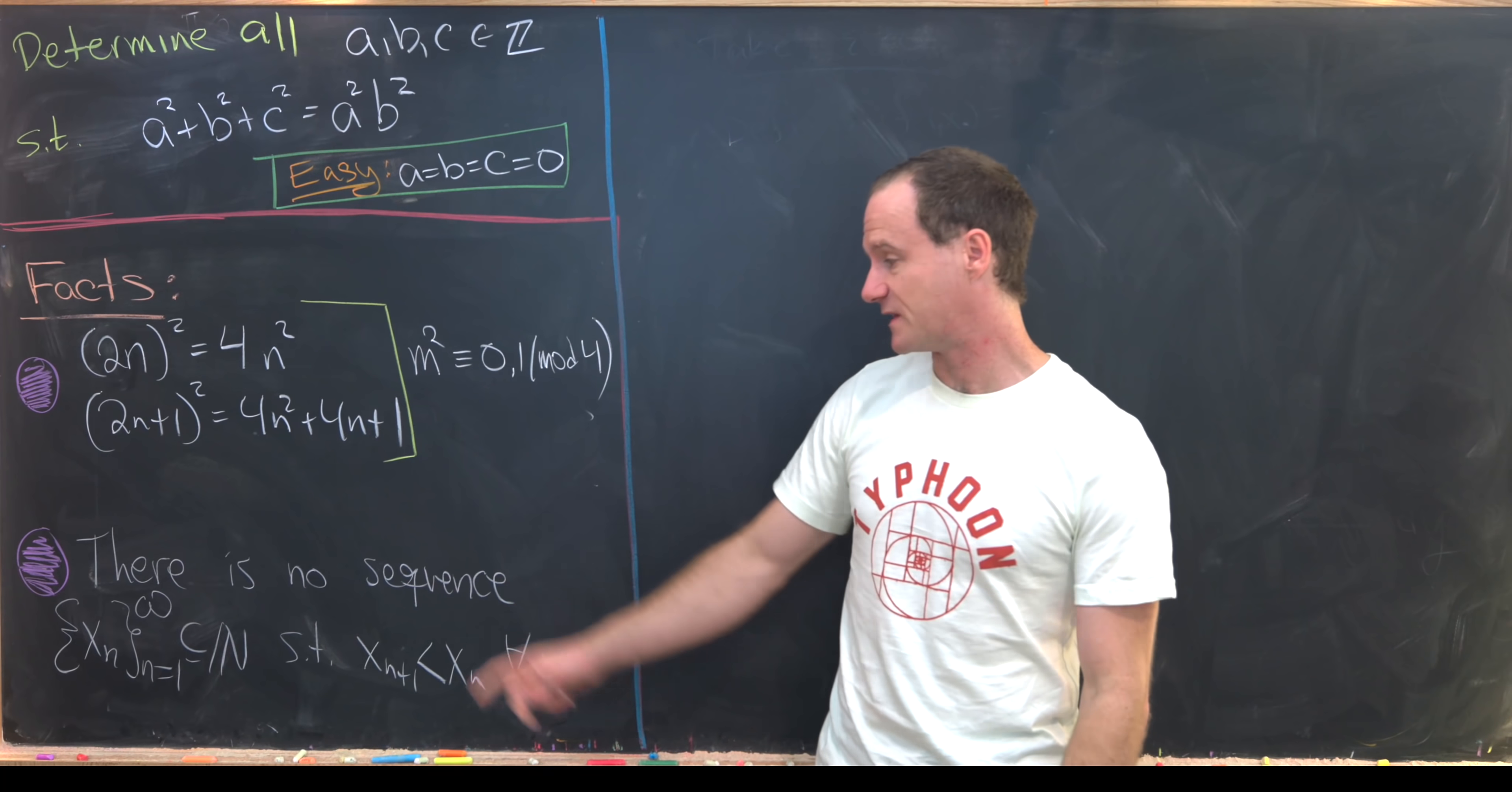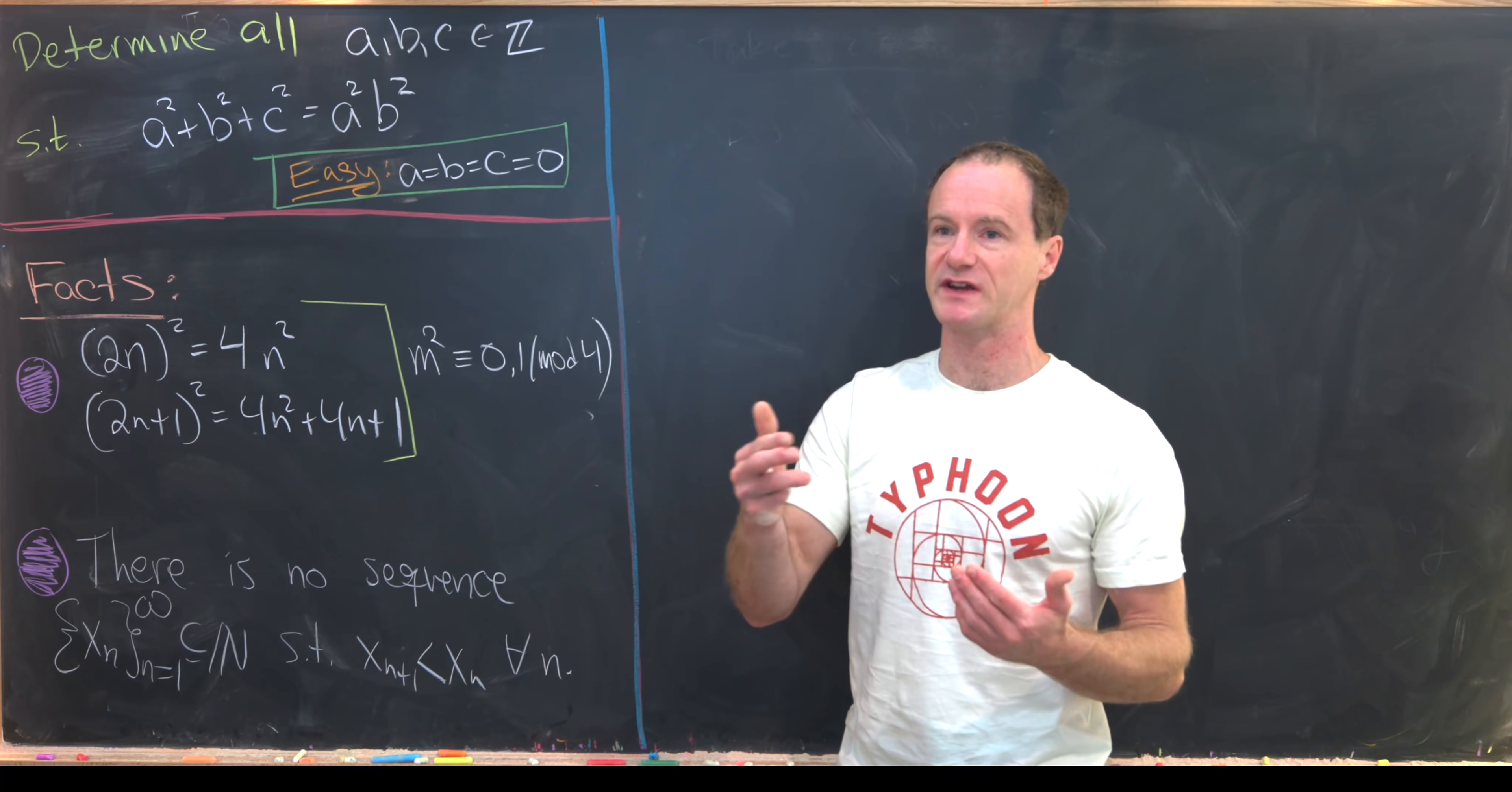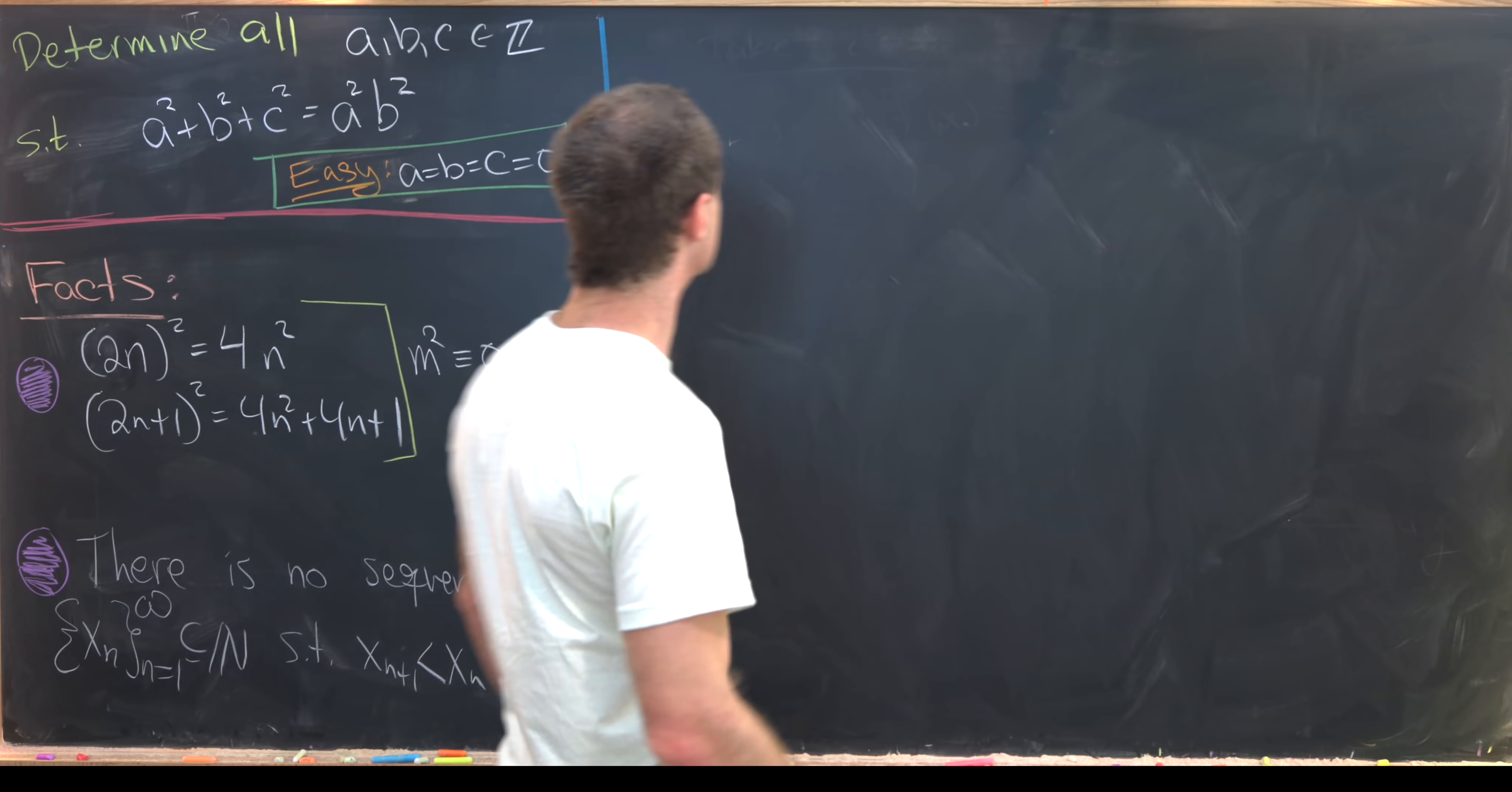Another thing that we'll use is the fact that there's no sequence of natural numbers that is strictly decreasing for all n. That's pretty clear because the natural numbers form this discrete set and it's bounded below. So if you're always decreasing, you're going to run out of natural numbers at some point.